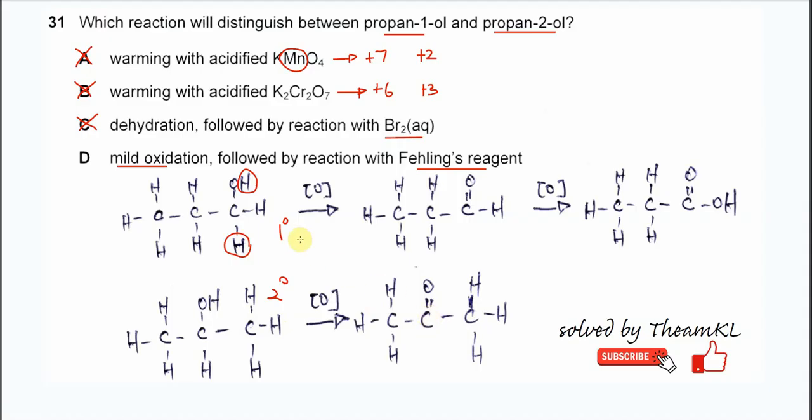So we can use mild oxidation and Fehling's reagent to distinguish propan-1-ol and propan-2-ol. Therefore, the answer is D. Okay, that's all. Thank you.